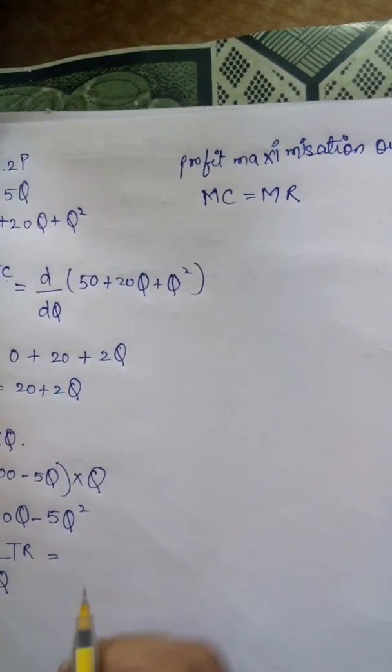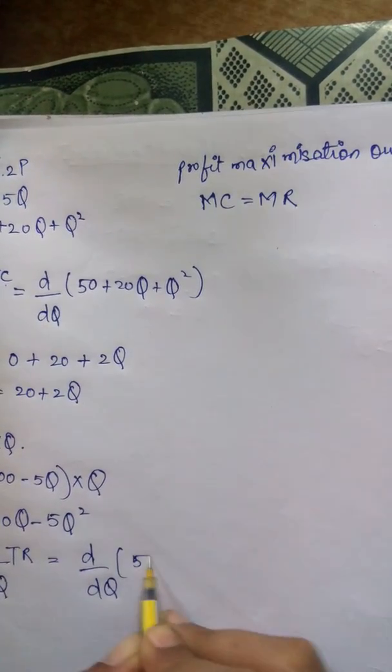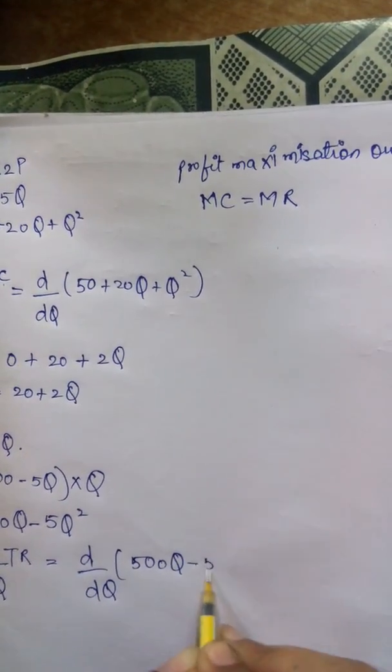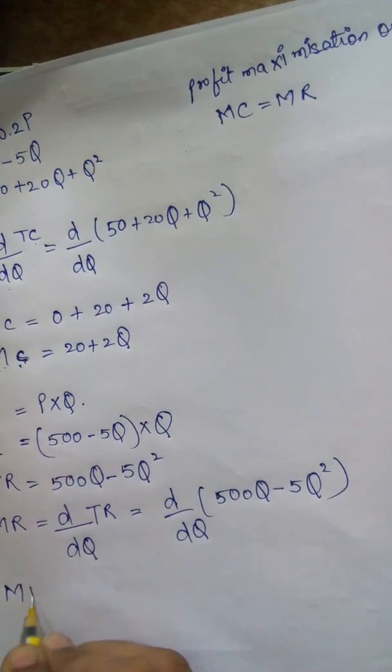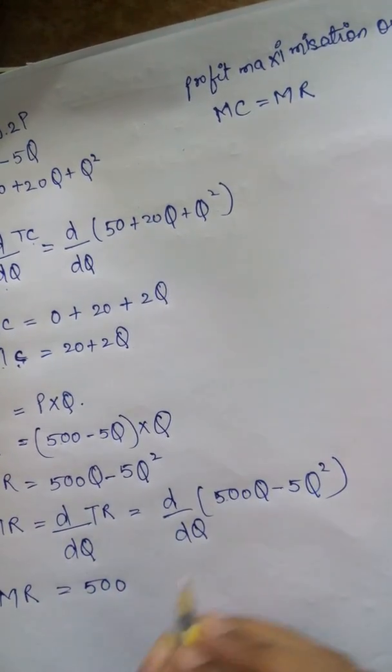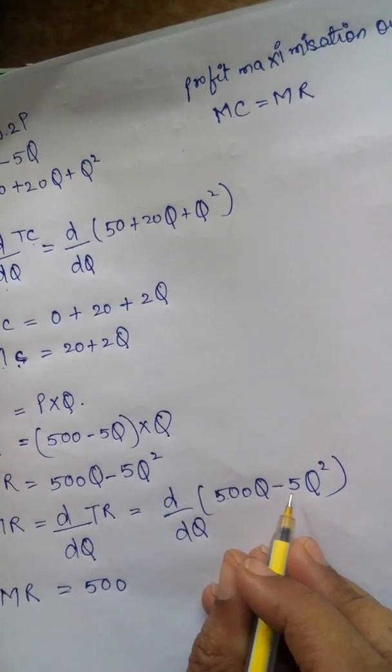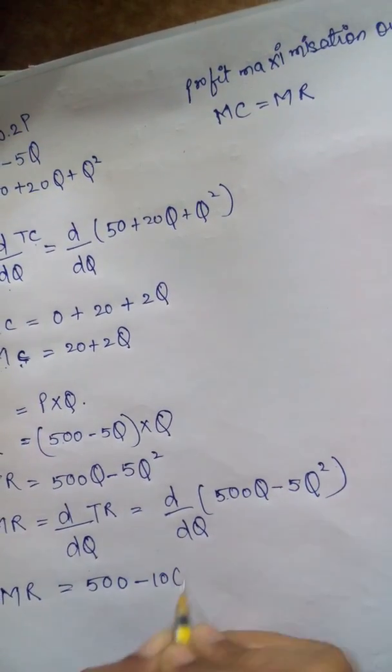We will differentiate TR. If we differentiate d/dQ of 500Q minus 5Q squared, we will get MR. By differentiating 500Q we get 500, and by differentiating minus 5Q squared we get minus 10Q.